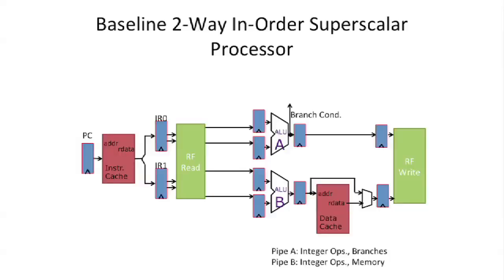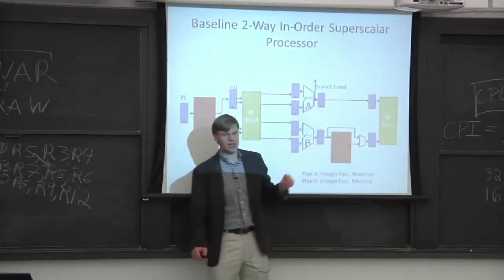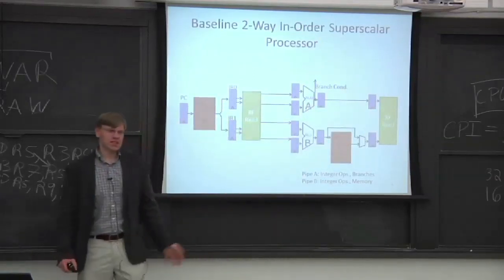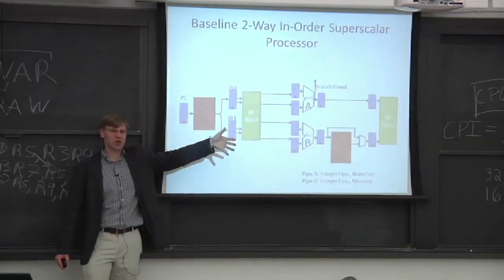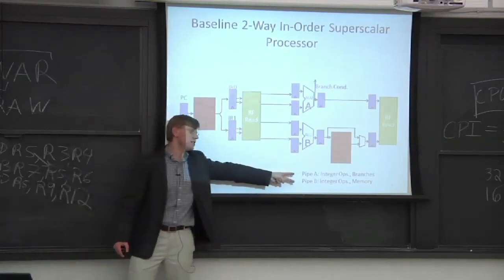Pipeline A can do integer ops and branches. Pipeline B can do integer ops and memory access. But you can't do memory up here and you can't do branches down there. There's nothing fundamental. We're just going to look at this sort of basic example here. We have two asymmetric pipelines.